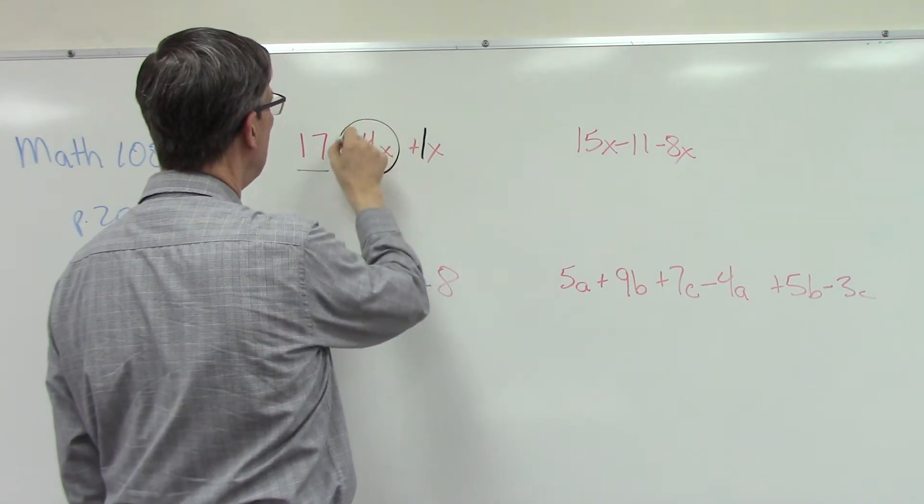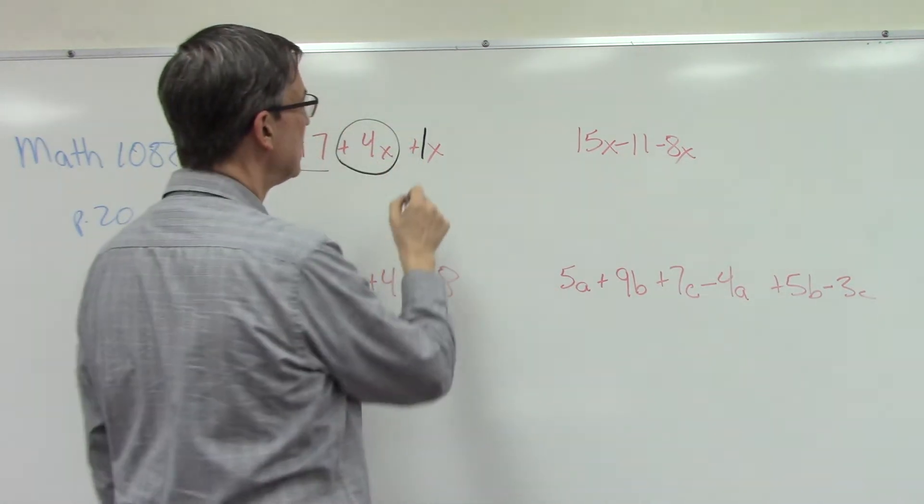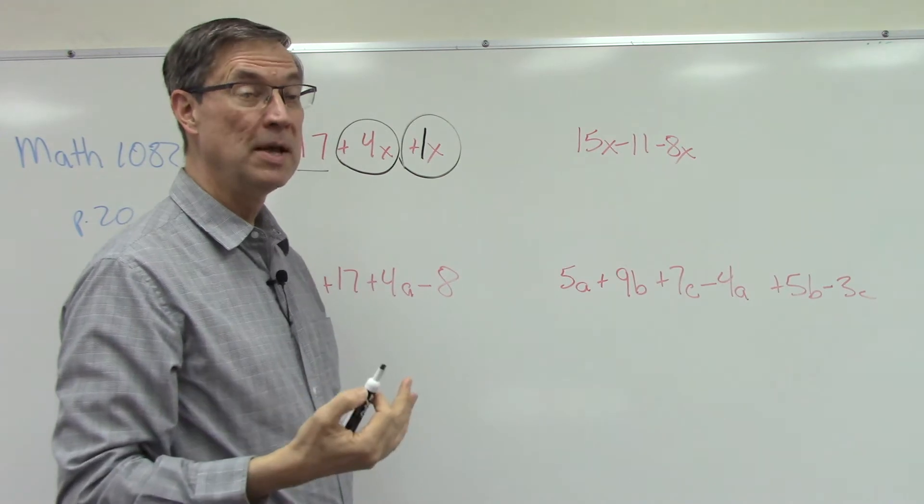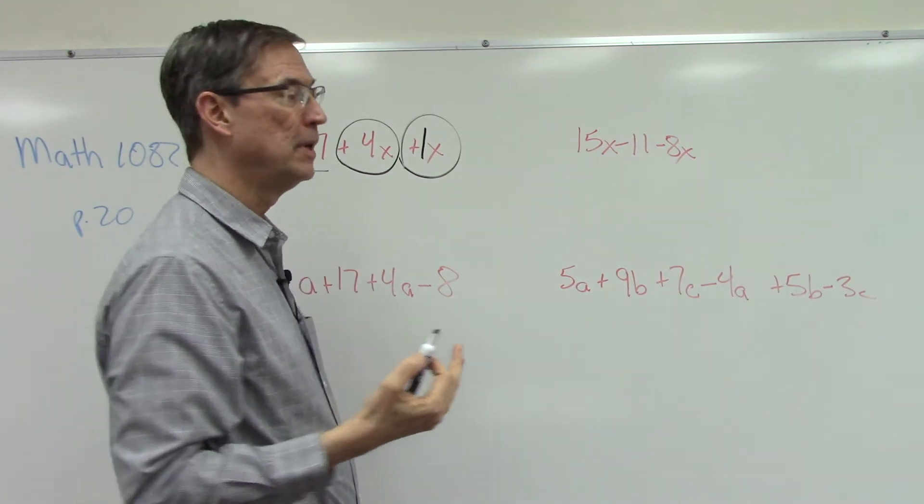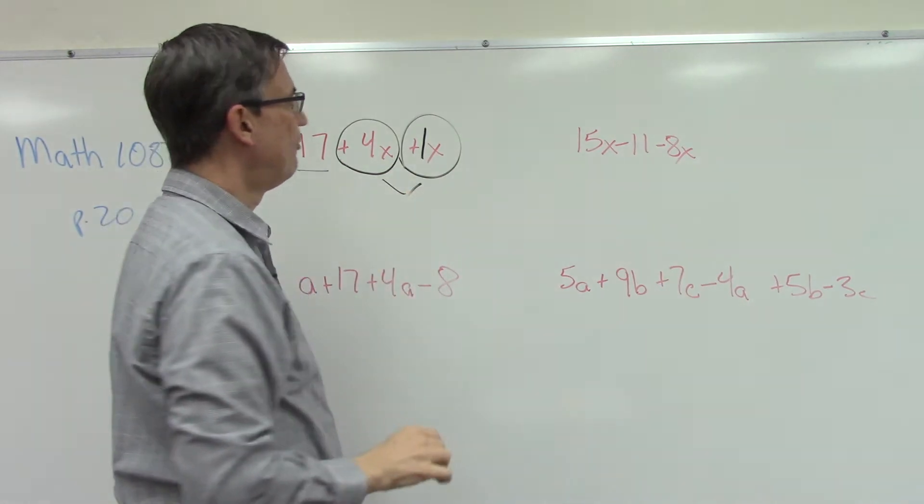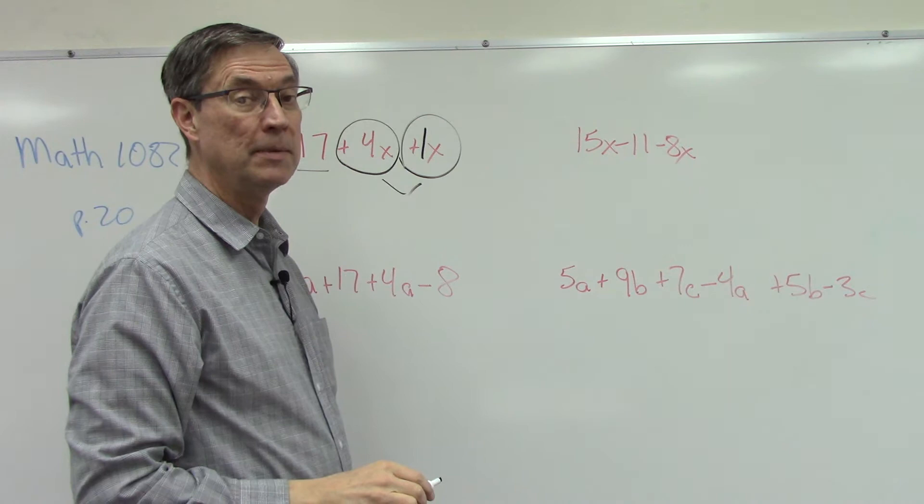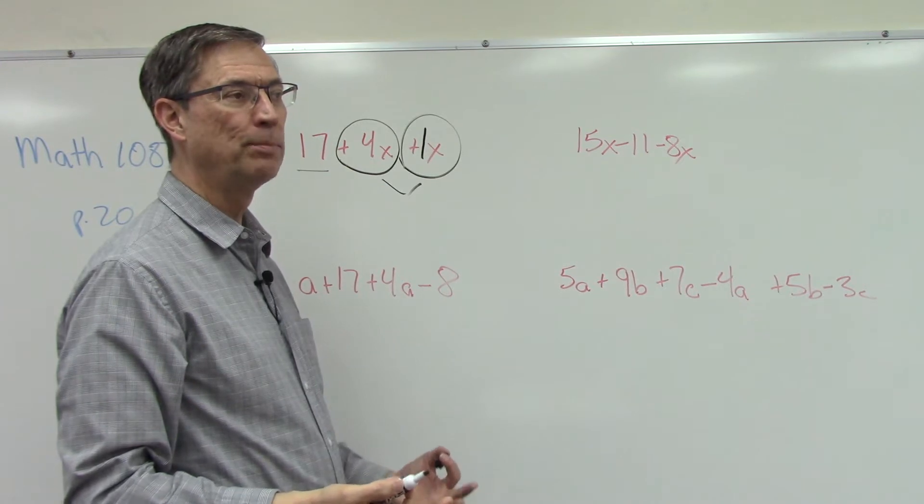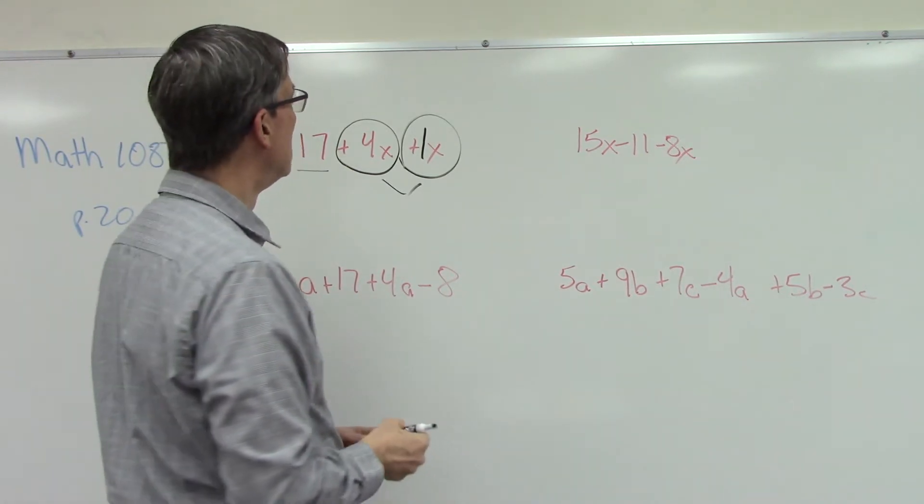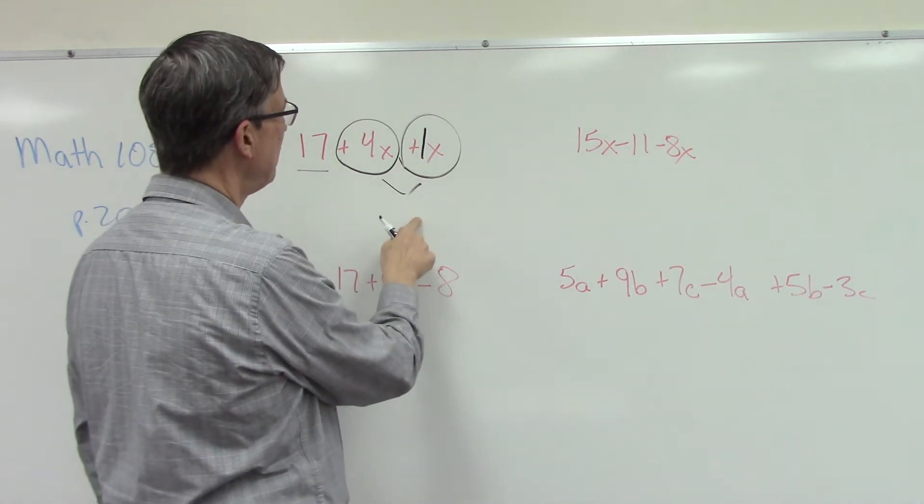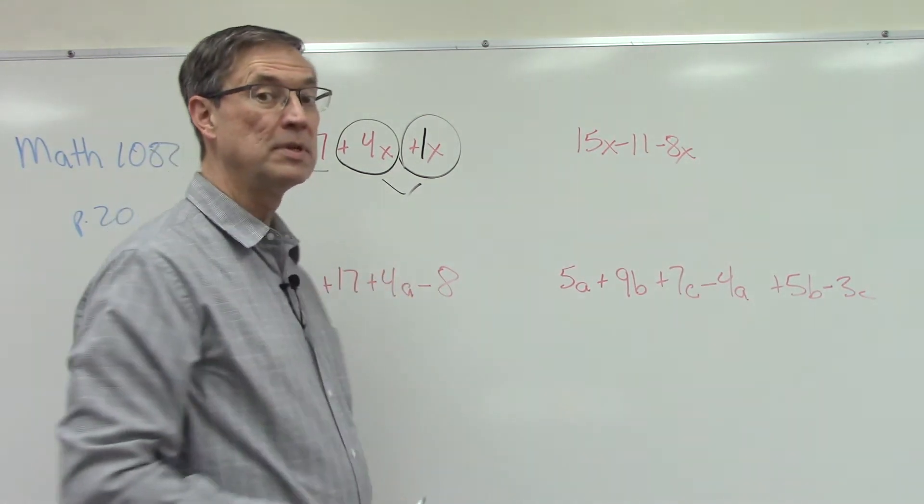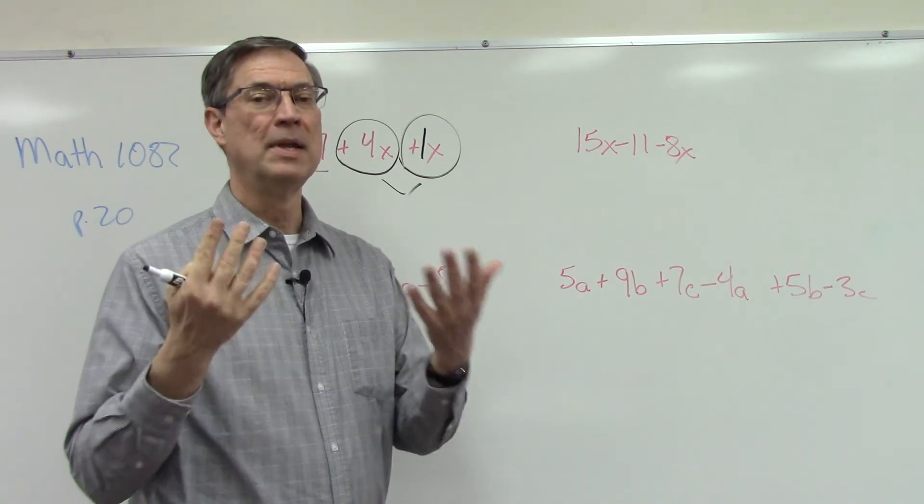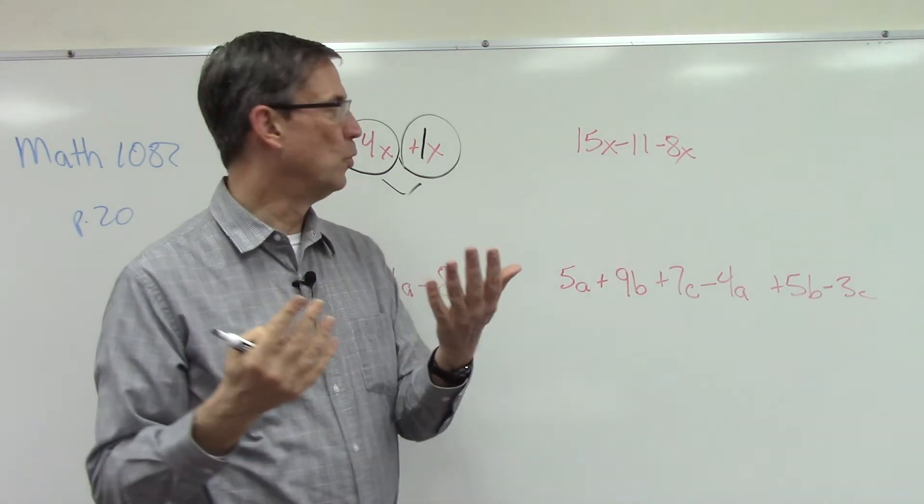Okay, now what I always like to do is circle each of the like terms and combine. Make sure you put the sign that's in front of it, either the plus or if there's a minus, put that with it because that's like the positive or negative indicator. So basically now I can add 4x plus 1x, which would be 5x. Okay, not x squared. We'll get to that later when we're multiplying letters. So you could write 17 plus 5x or you could write this as 5x plus 17, and if you switch the order on your answer compared to the score key, that does not make it wrong.